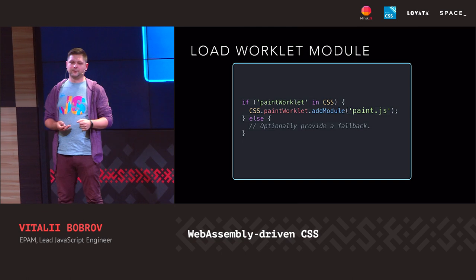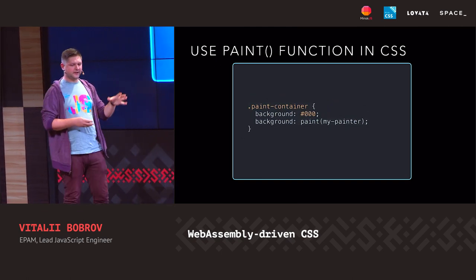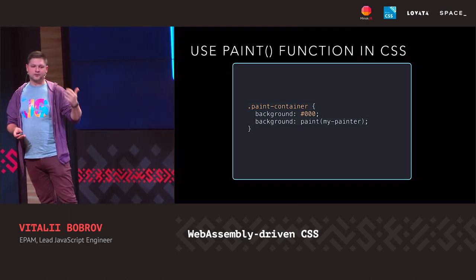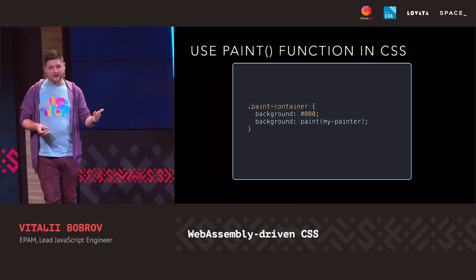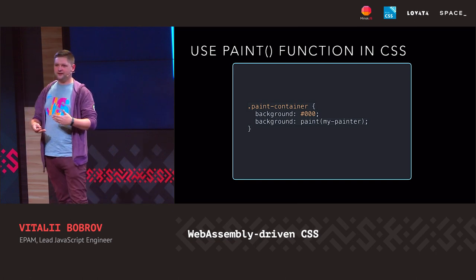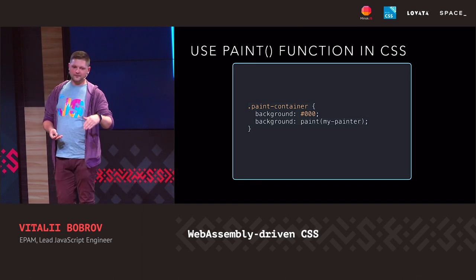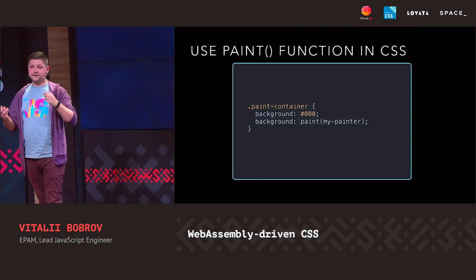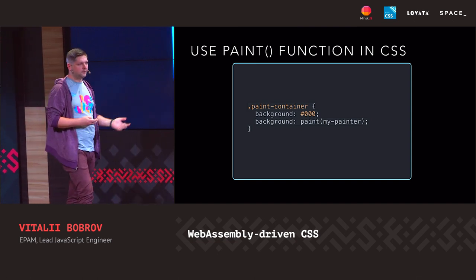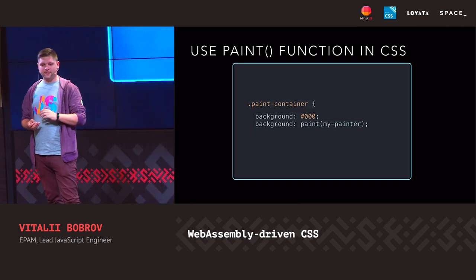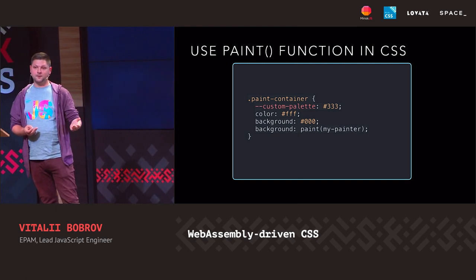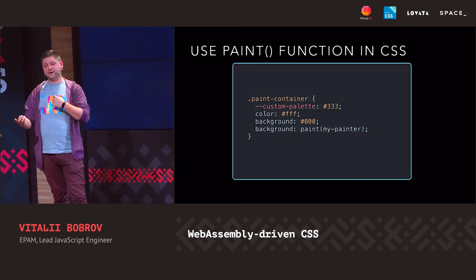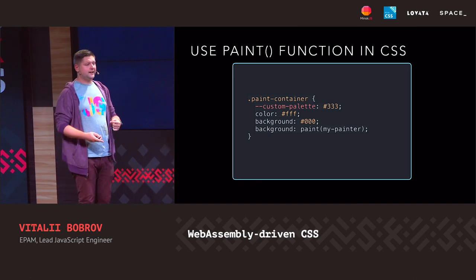Optionally we can pass some fallback values. In CSS, we have a standard CSS declaration where we define a background. The solid background color that comes first will be used as a fallback, because as with any CSS property, if it's not supported, the browser will just ignore it and use the previous one. On the next line, we call the paint function, and inside this function we just pass the name of our Paint Worklet. We can also use some properties that we are listening for — we can define a custom property or use a standard CSS property, and when the value of that property changes, Paint API will re-render our image.